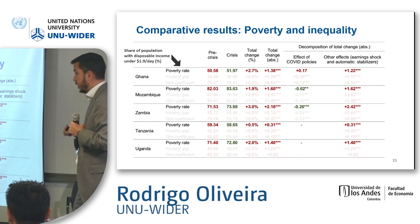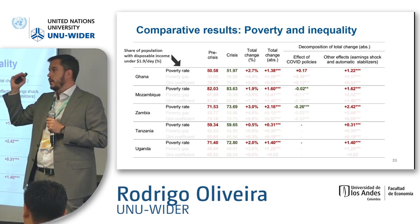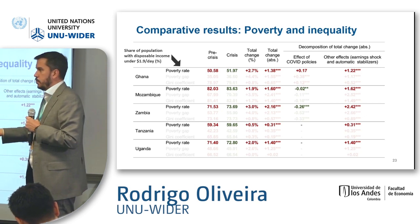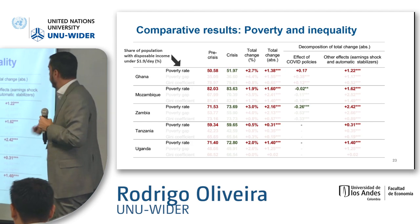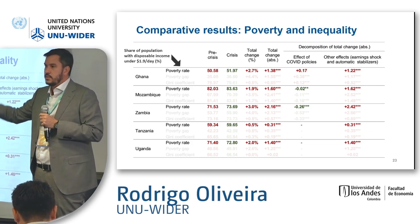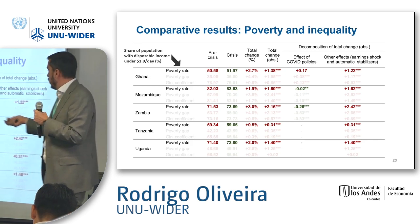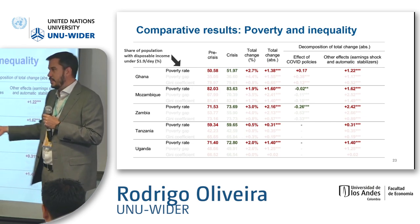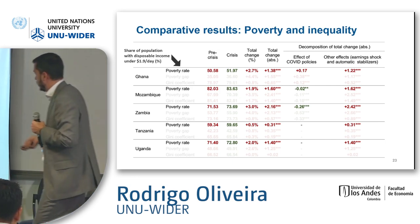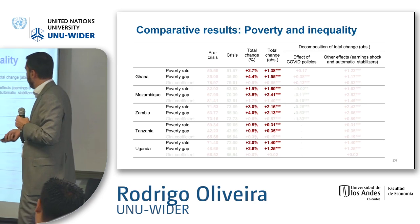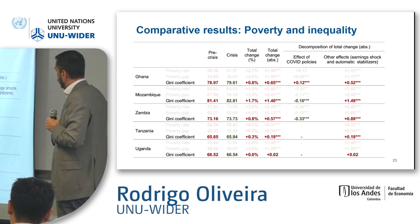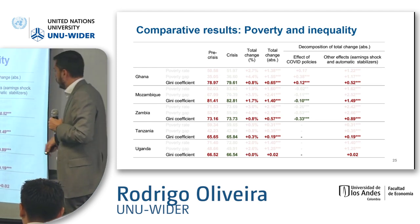Automatic stabilizers actually increased inequality, mainly because they affect people with higher incomes. In African countries, people in the formal labor market are only a small percentage of individuals, and only those individuals are affected by automatic stabilizers. So if you have a shock that affects everyone, only the top earners benefit from automatic policies — the poorest are the most affected because they are not protected by anything. Similar results are found for poverty gap and the Gini coefficient.